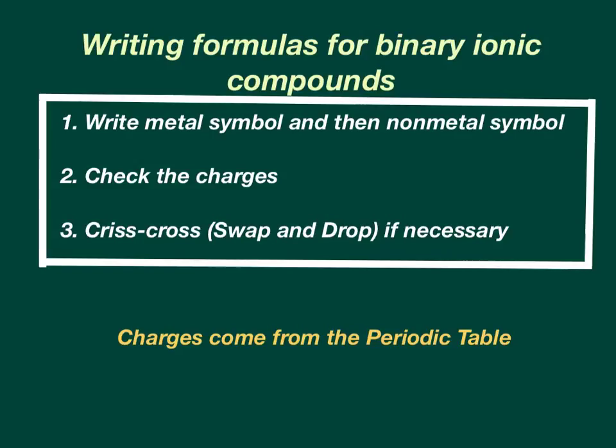Now writing the formulas for binary ionic compounds is a little bit more detailed. First of all, you write the metal symbol, and then you write the nonmetal symbol. You check the charges from the periodic table, and then you criss-cross. I call it criss-cross applesauce, meatball in my soup. Some people have called it swap and drop, and that works too. And you only do that if it's necessary. We're going to practice when it's necessary. Make sure you write down those three steps, and then we're going to practice it.